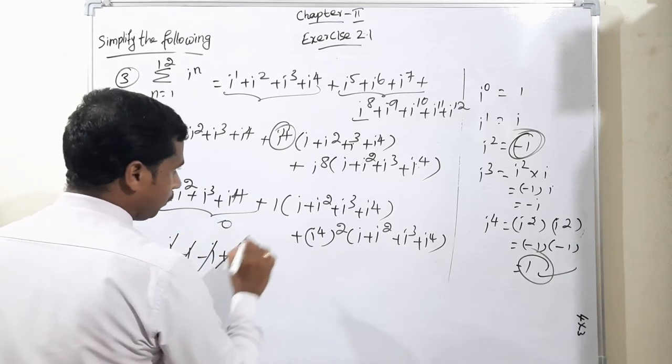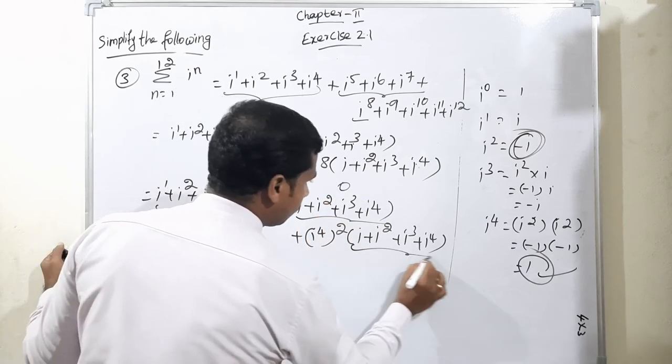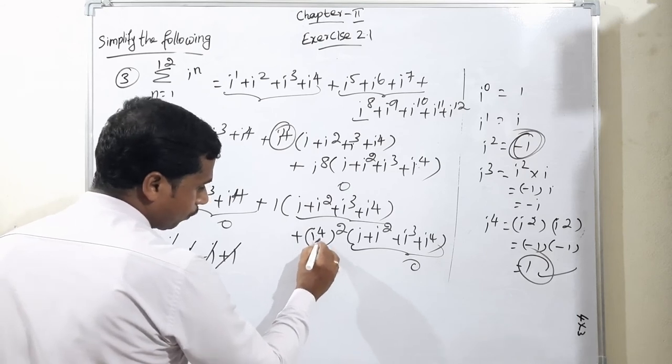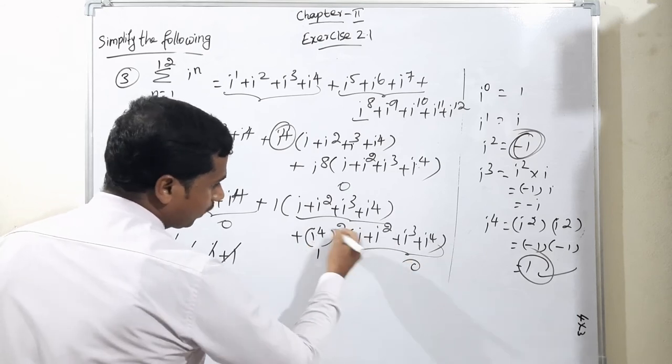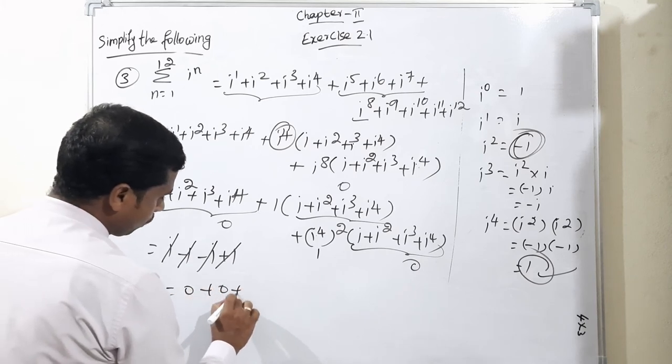Similarly, each grouped term equals 0. Anything to the power of i power 4 is 1, so 1 square is 1. Therefore final answer: 0 plus 0 plus 0 equals 0. That is our final answer.